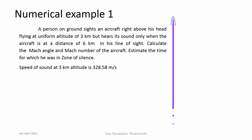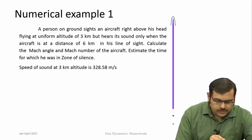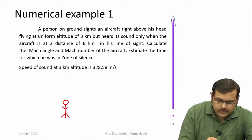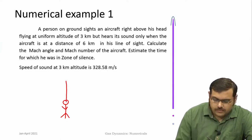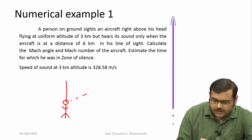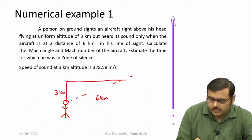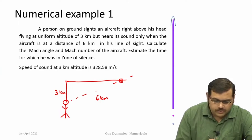It is always useful to look at it in a diagrammatic fashion. If you consider a person standing here and he observes an aircraft going right above his head, at that time he did not hear anything. Along his line of sight, this is the line of sight, and when the distance is 6 kilometers — so this is 3 kilometers — he is able to hear the sound of this aircraft.